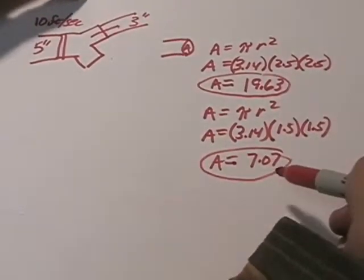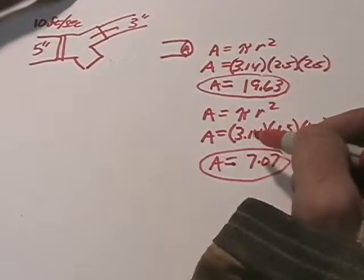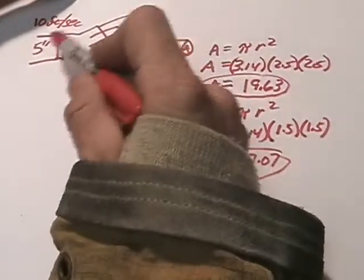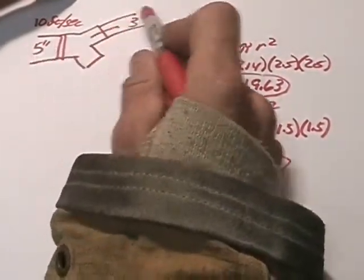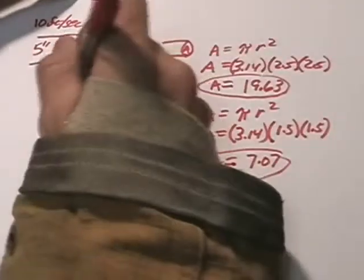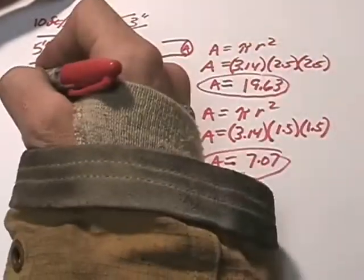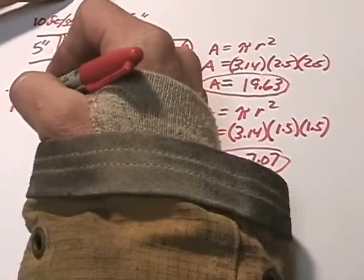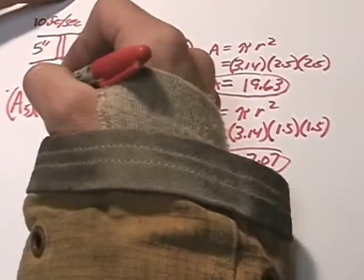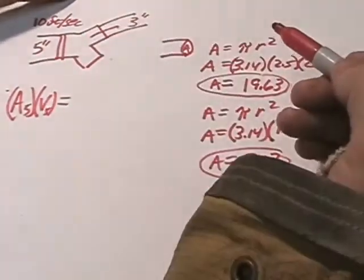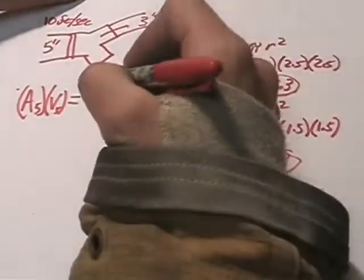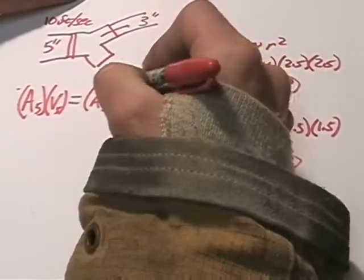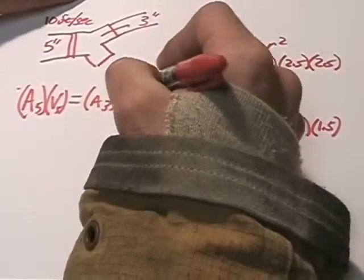So we now know our two areas. We just need to put those into a formula. We said earlier that any water flowing through the 5-inch is going to be the same. So we can set this up as an equation: the area of the 5-inch times the velocity of the 5-inch equals the area of the 3-inch times the velocity of the 3-inch.